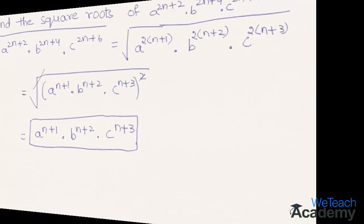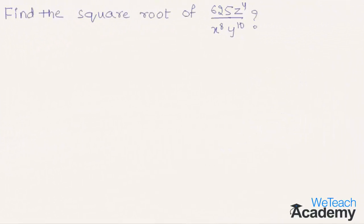Now let us proceed and solve another example. Find the square root of 625 z power 4 divided by x power 8 into y power 10.